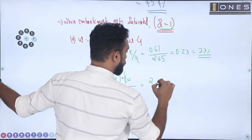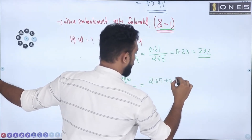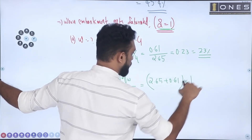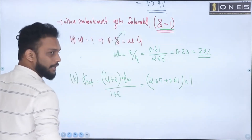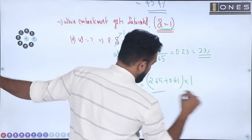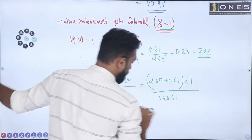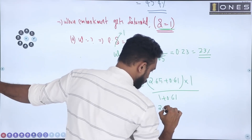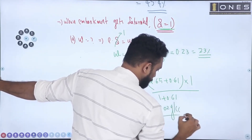Substituting S equal to 1, G equal to 2.65, and e equal to 0.61, the saturated unit weight gamma sat is calculated as 2.02 grams per cc.